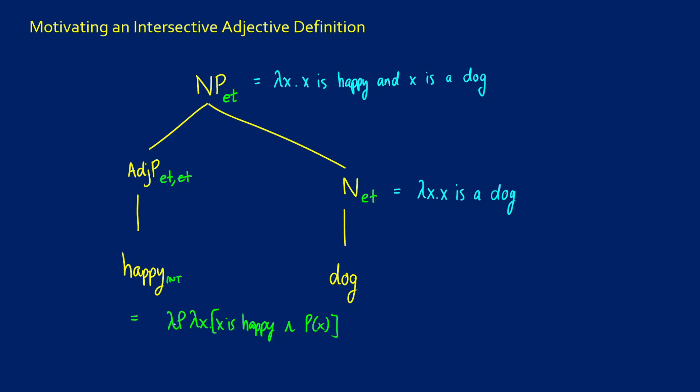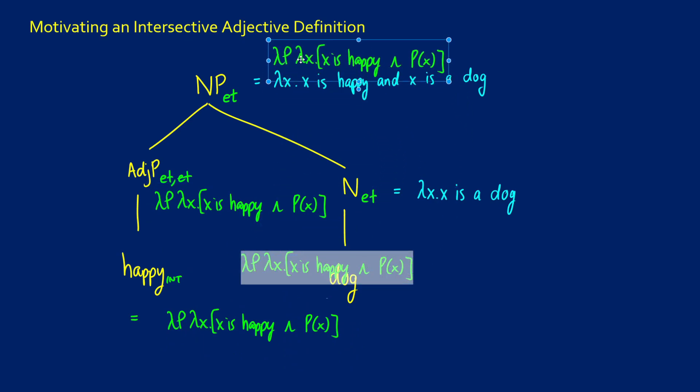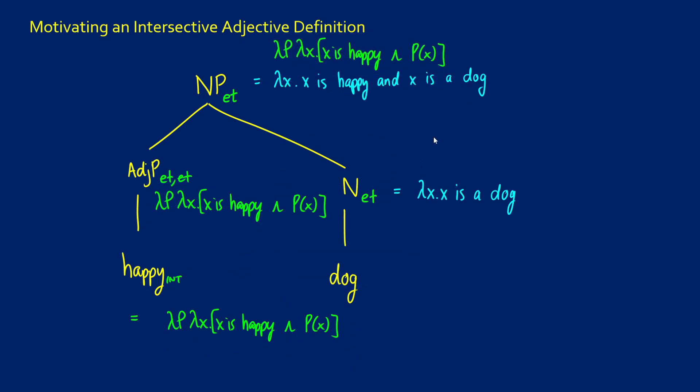So as this goes up the tree, we'll use this new definition. This is an ET ET. We're going to get function application on the top now because what we're going to get in our insertion here is lambda X dot X is a dog. And that is going to apply to the predicate P and then you're going to get binding and your final result is going to be lambda X dot X is happy and X is a dog.